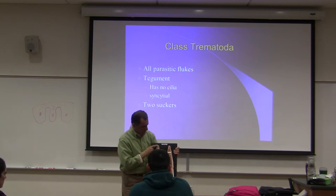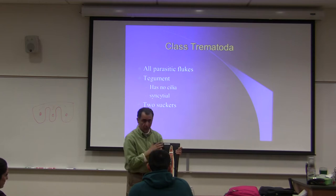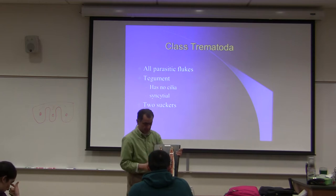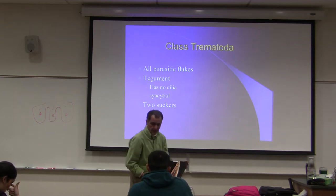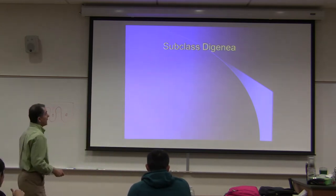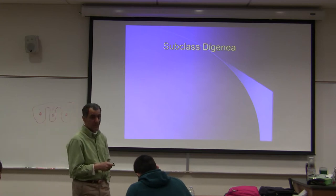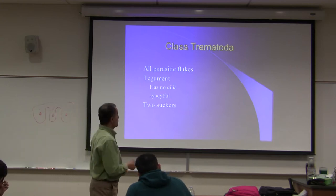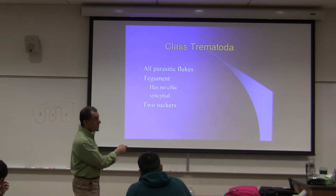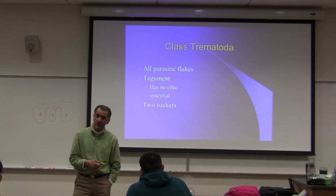This is the back of the animal, this is the ventral portion, and this is the dorsal portion. You see it on the ventral side. Don't worry about the division of the class Trematoda into subclasses. I will not ask you during lecture or lab exam about subclasses.